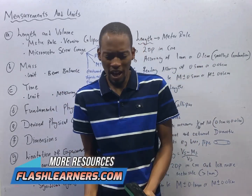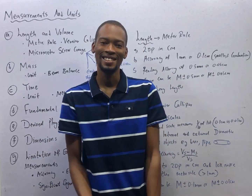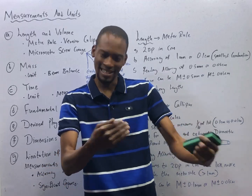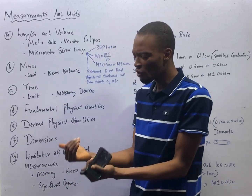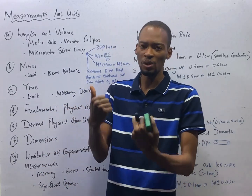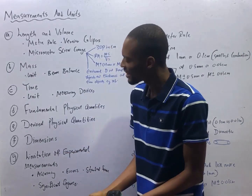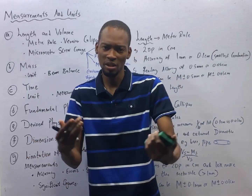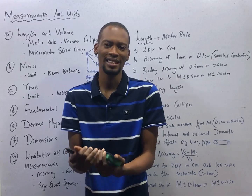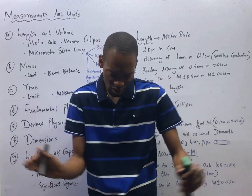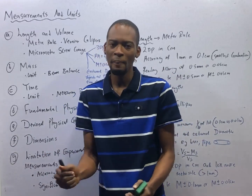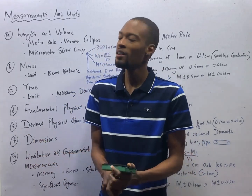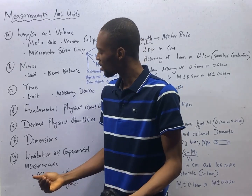We also have derived quantities. These derived quantities, as the name implies, are from fundamental quantities. Which means they get their formula and their units from the fundamental quantities. And they are gotten by combining two, three, or more fundamental quantities.